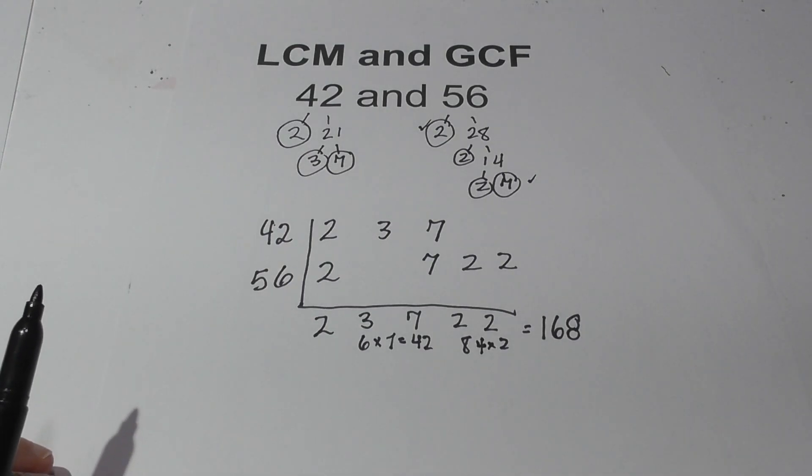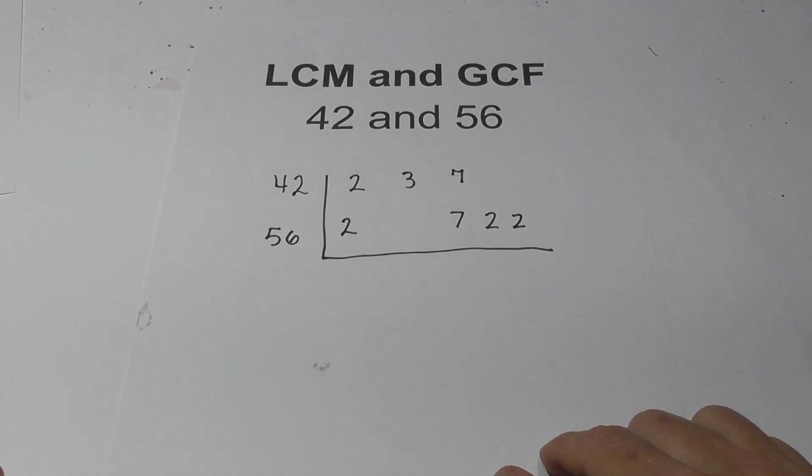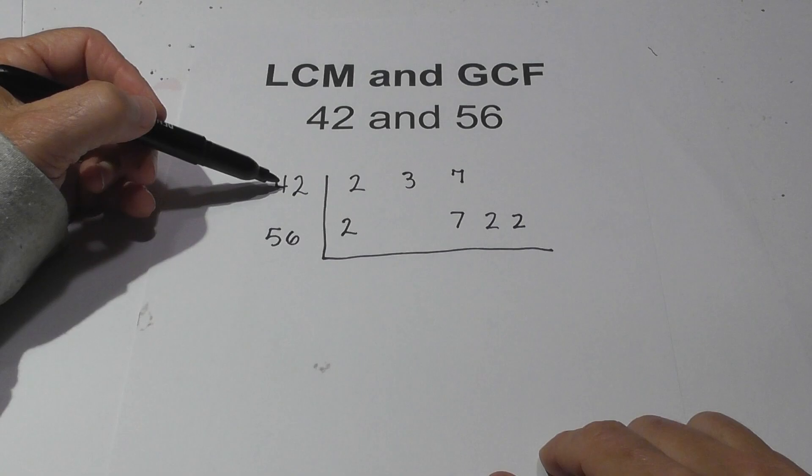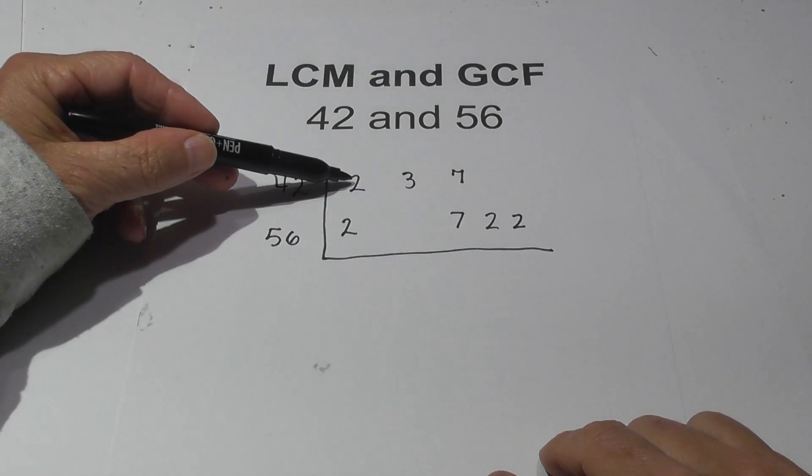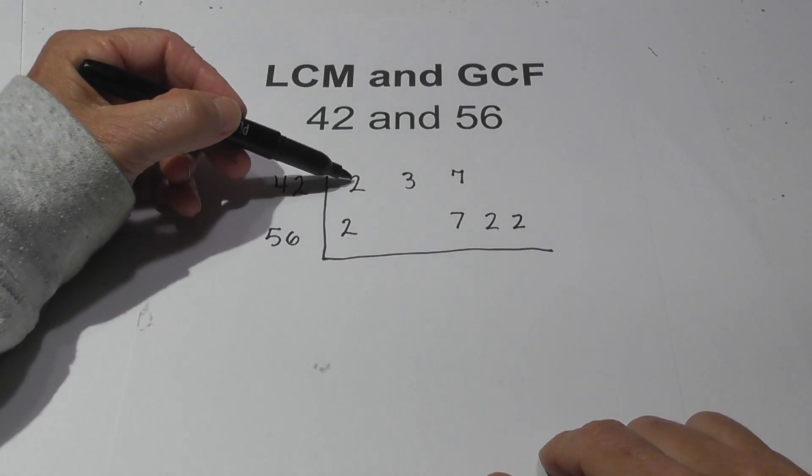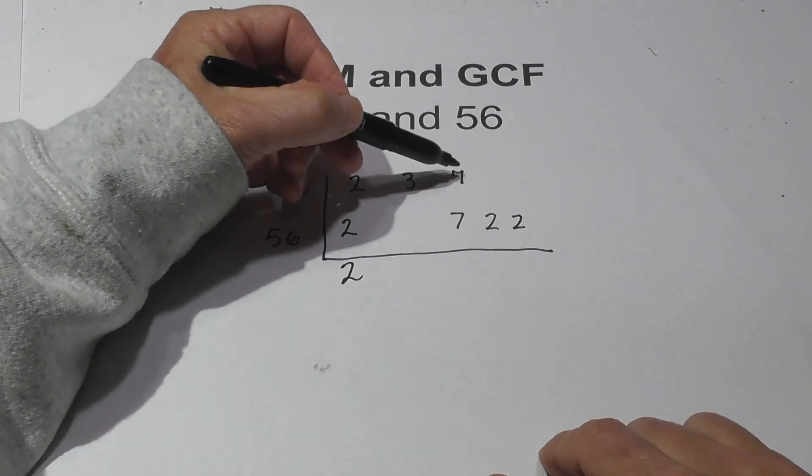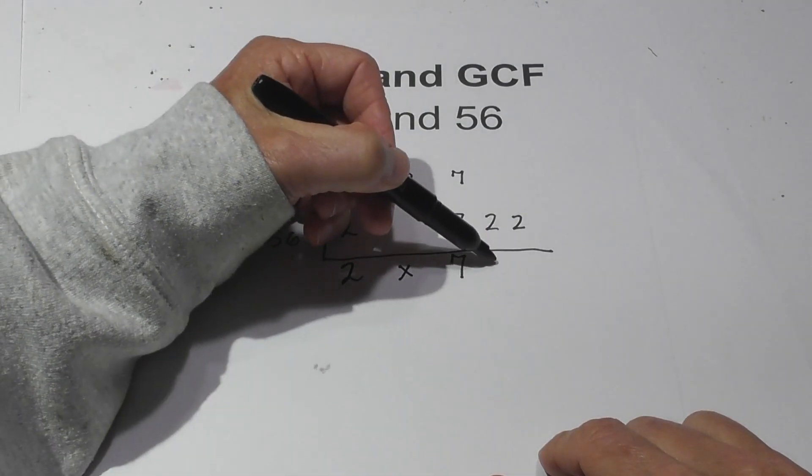Now, for the greatest common factor, what you do is you find numbers that are represented in both numbers. The 42 has a prime factor of 2, and the 56 has a prime factor of 2, or there's 2 in this column. So I'm going to bring down the 2, and then I have the same with the 7. And then you multiply these together, and that equals 14.